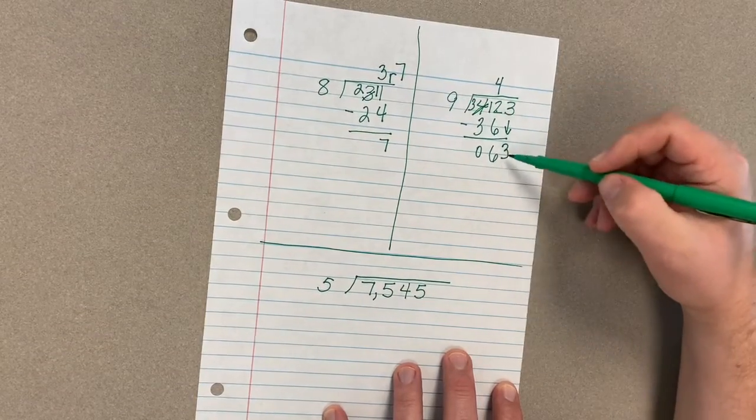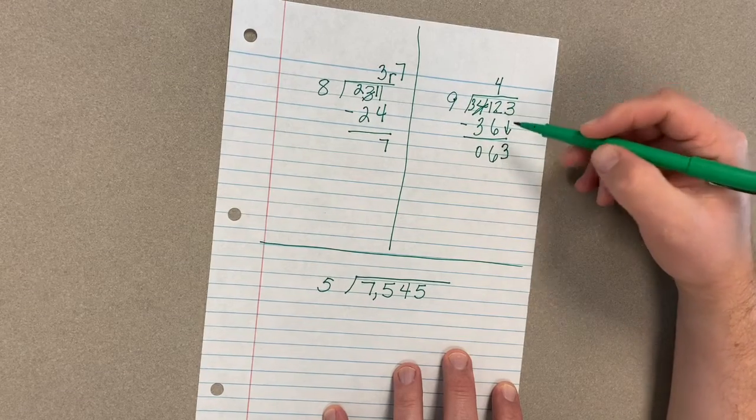And I'm going to drop down this lovely 3. I'm dealing with the number 63. 9 and a 63.